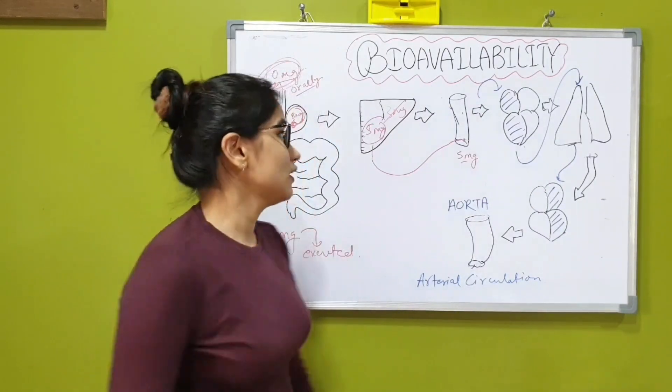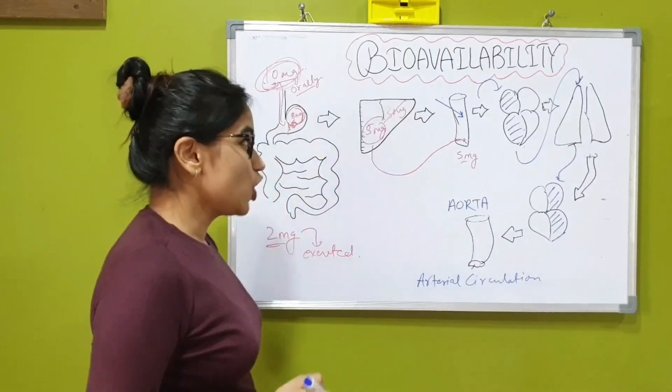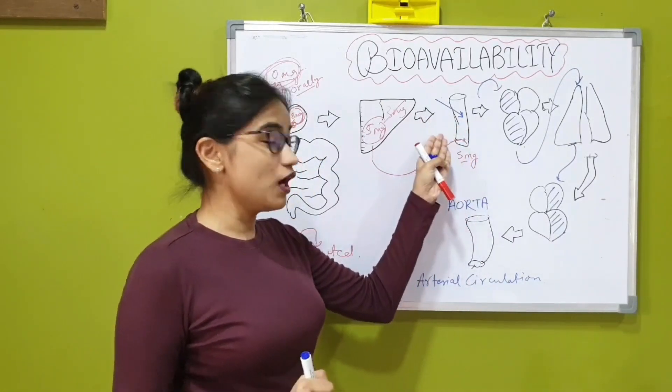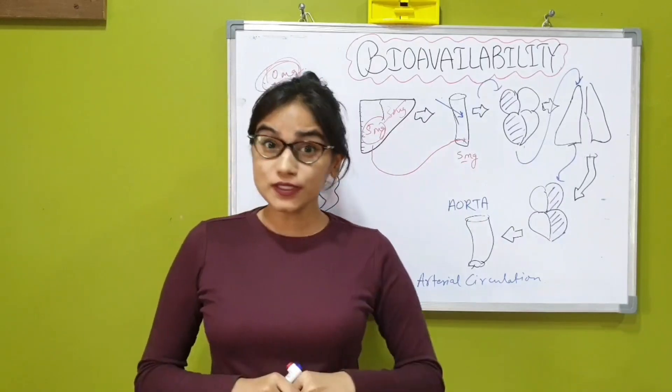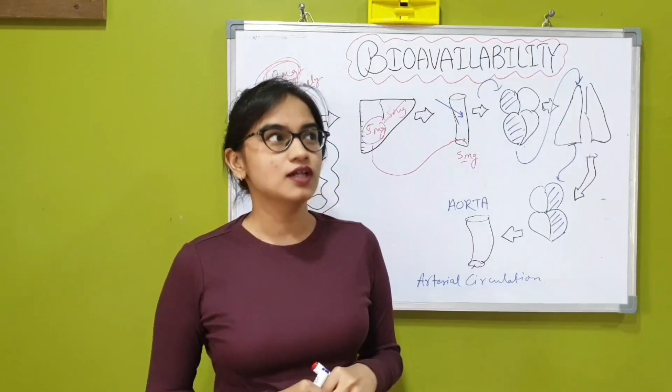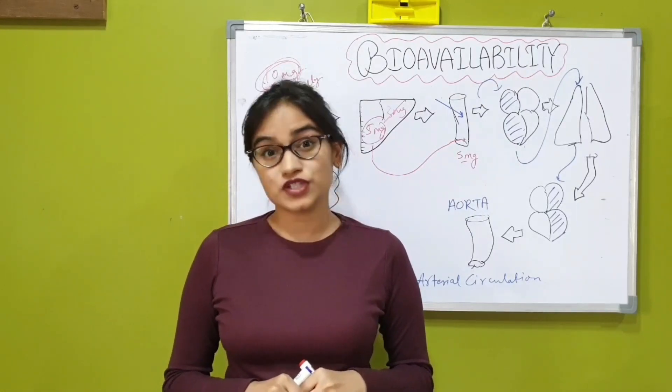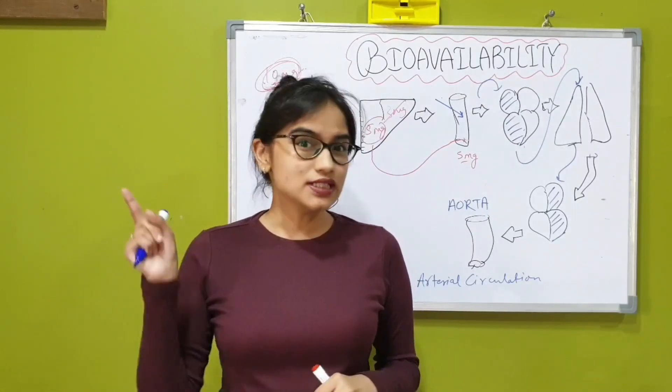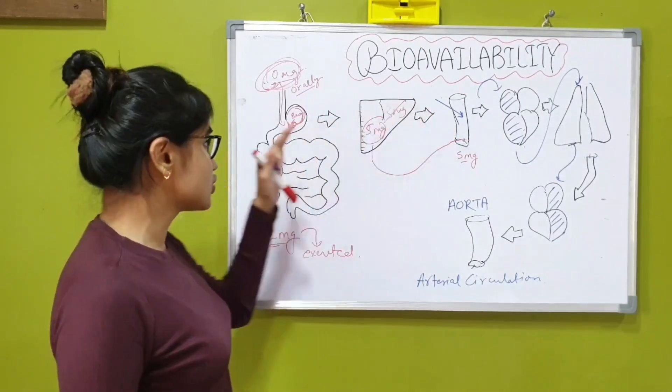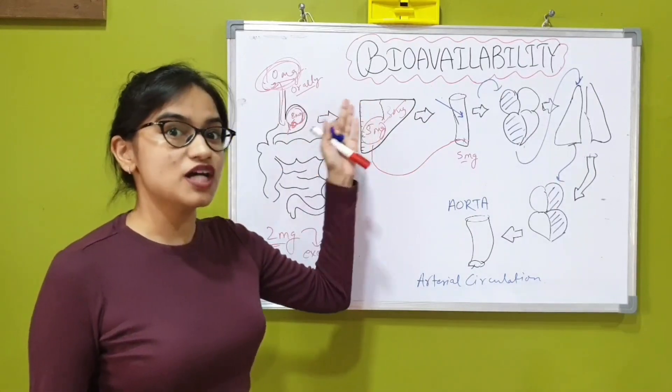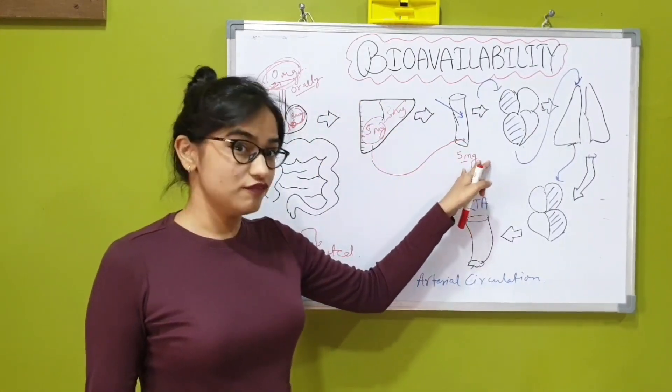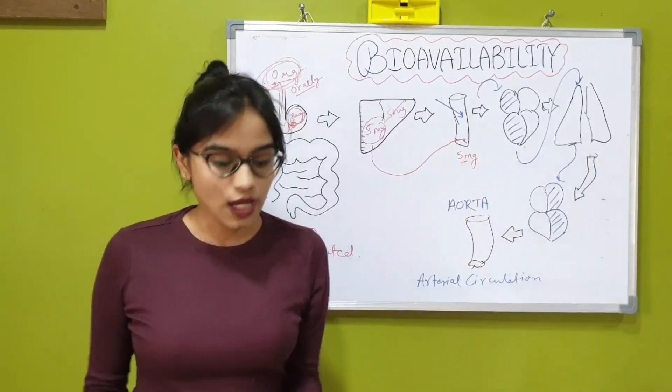Now let's suppose you gave the IV injection of the same drug. In this case, the bioavailability of this drug will be 100%. I already told you about the bioavailability of intravenous drug to be 100% in my previous tutorial about routes of drug administration. I didn't explain it there, but here it can be clearly explained because there is no loss through GIT or through the first-pass metabolism. Therefore, the bioavailability of intravenous route is always 100%.